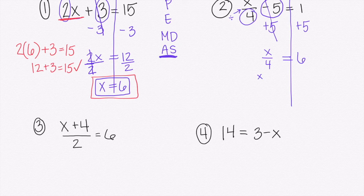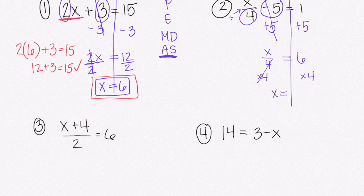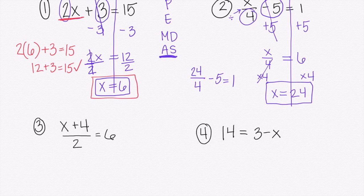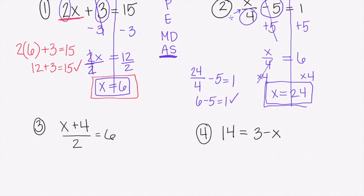Negative 5 plus 5 gives us x over 4 plus 0 — those cancel, so we just have x over 4 equals 1 plus 5, which is 6. To get rid of divide by 4, we multiply by 4. 4 over 4 gives us just x. 6 times 4 gives us 24. Checking: 24 over 4 minus 5 equals 1. 24 divided by 4 is 6, minus 5 gives us 1. Correct.